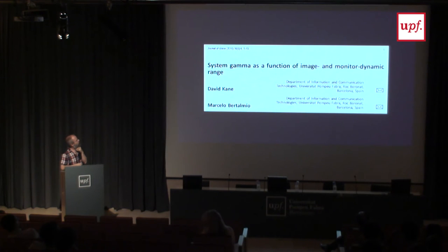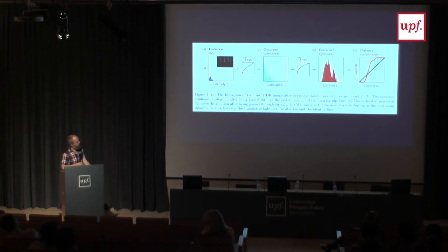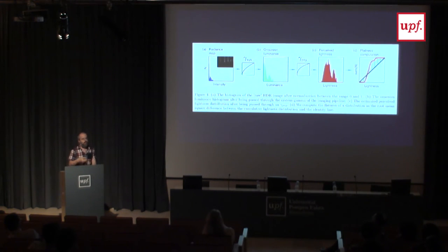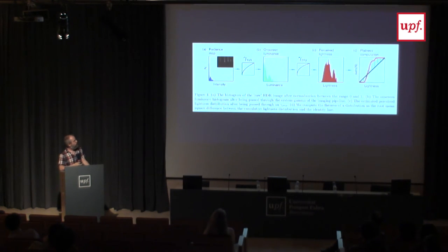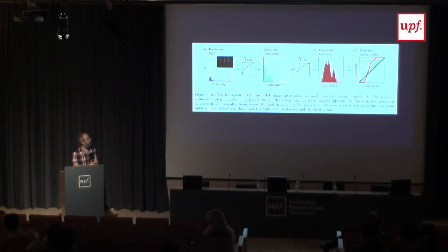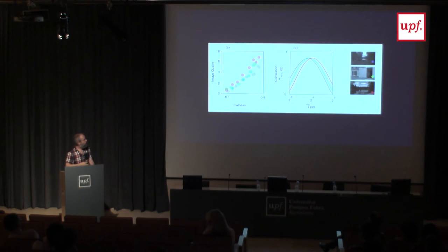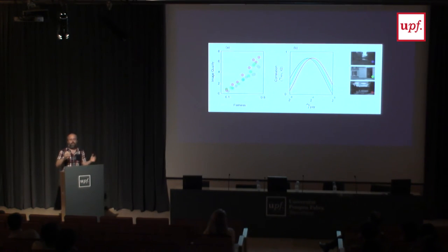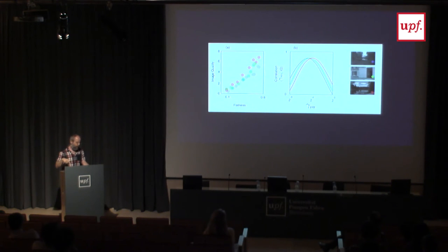We did work that appeared this year in which we asked people to judge the quality of images as we varied different variables. We found a significant correlation between the image quality that people reported and the level of uniformity of the lightness histogram of the scene. That allowed us to derive several conclusions regarding the gamma curve that both the encoding and the display should have, and also to touch upon the effect of the background and surround of the image on its perception.